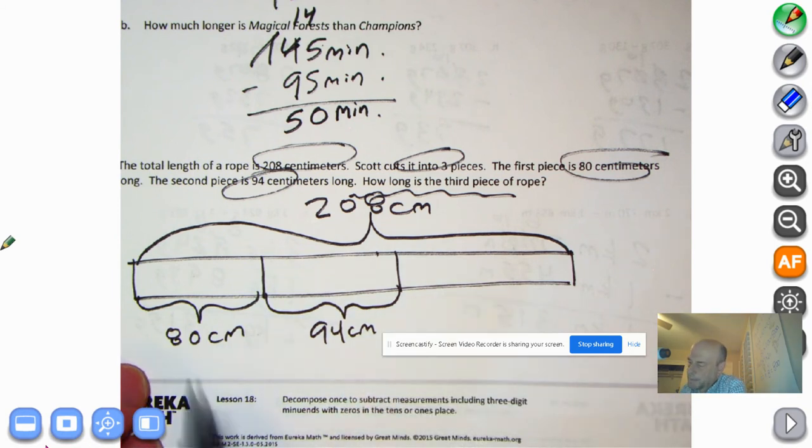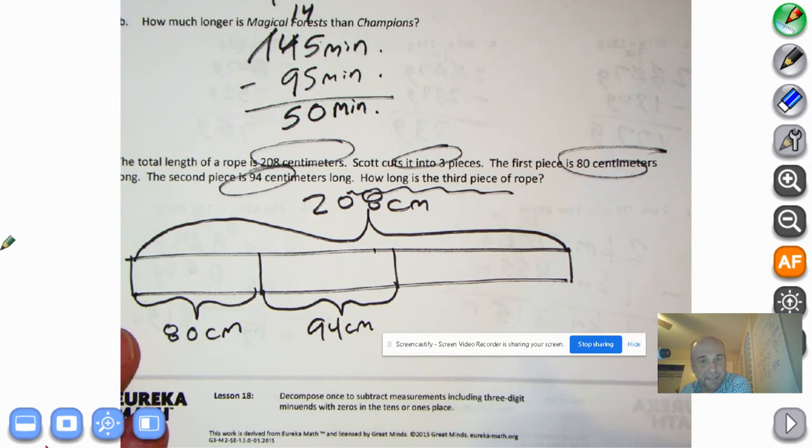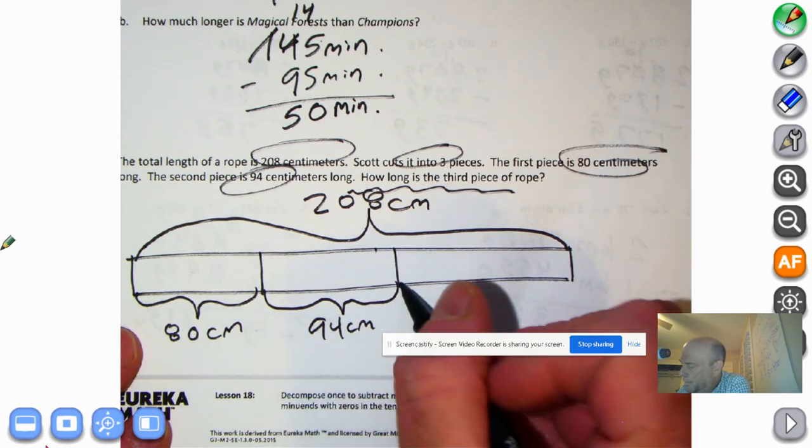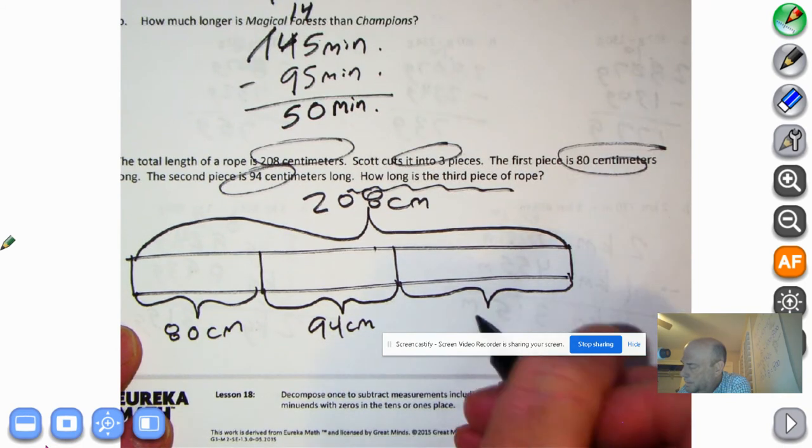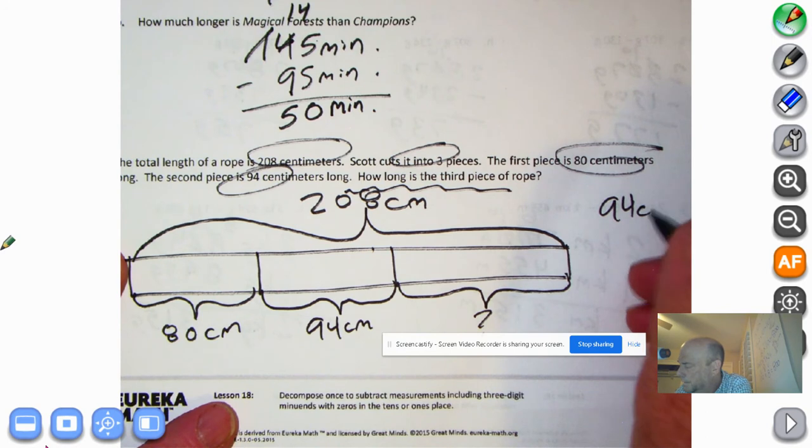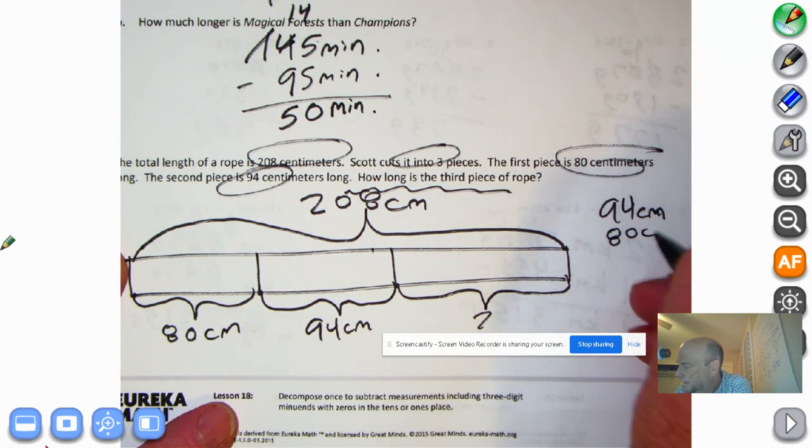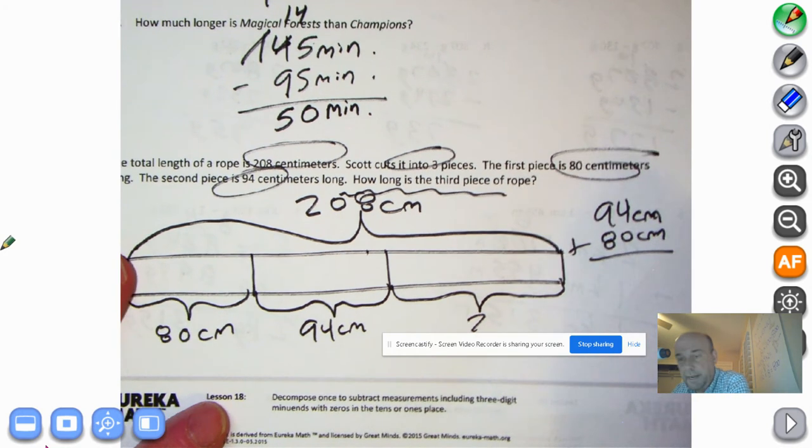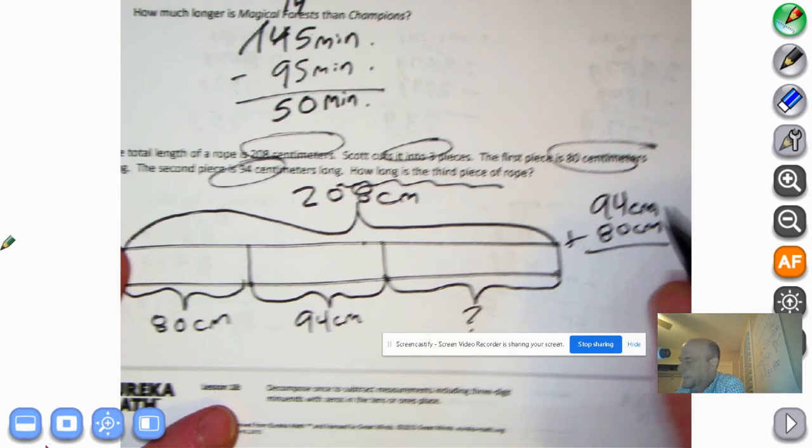So by rounding, we could probably say 80 plus 90 is 170. So our answer is probably, we need to add these two up together because what we don't know is this third piece. So let's add these together, 94 centimeters plus 80 centimeters. And go ahead and pause the tape. I'm going to push Princess Yvonne out. And do this on your own.